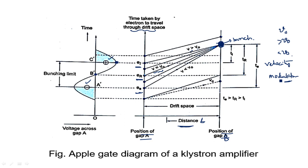Velocity modulation occurs because of the application of the RF input voltage onto the standard electron velocity. As the RF input voltage changes in its positive and negative sides, the velocity of the electron changes as it travels from the buncher cavity to the catcher cavity — from gap A to gap B. TL is the late electron transit time, TR is the reference electron transit time, and TE is the early electron transit time. This is the operation of the two-cavity klystron amplifier and the bunching process. Thank you.